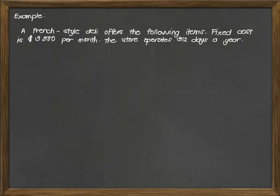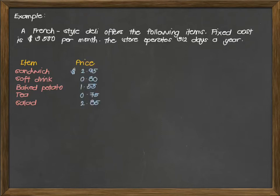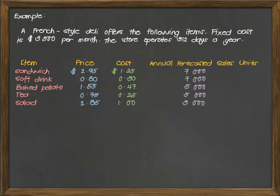Let's go to our example. A French-style deli offers the following items. Fixed cost is $3,500 per month, and the store operates 312 days a year. The store offers the following items: sandwich, soft drink, baked potato, tea, and salad. We are also given the price or the selling price for each item being sold, and its corresponding cost or variable cost. Then you also are given annual forecasted sales units.